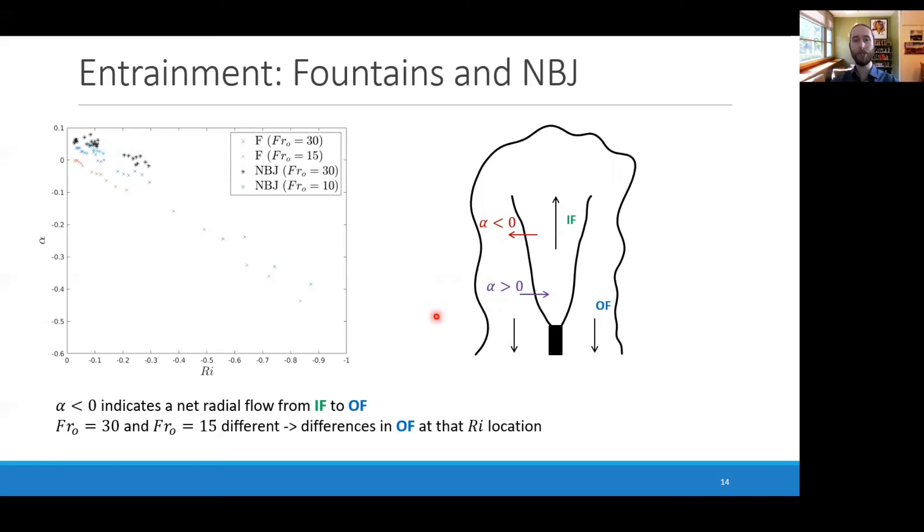This can be attributed to the outer flow, because if you recall, the Richardson number was defined just on inner flow quantities. So at a particular Richardson number, the outer flow in both of those fountains may be different. You can also think of this at the origin or at the source where the Richardson number is zero in both cases, but the outer flow may be different for both that Froude number 30 and Froude number 15 fountains.